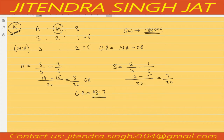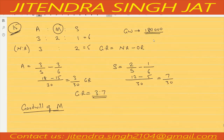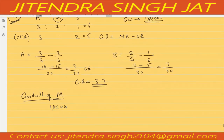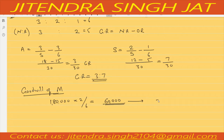Goodwill of Manisha = 1,80,000 × 2/6 = 60,000. This 60,000 goodwill will be given by Aparna and Sonia in their gaining ratio of 3:7.